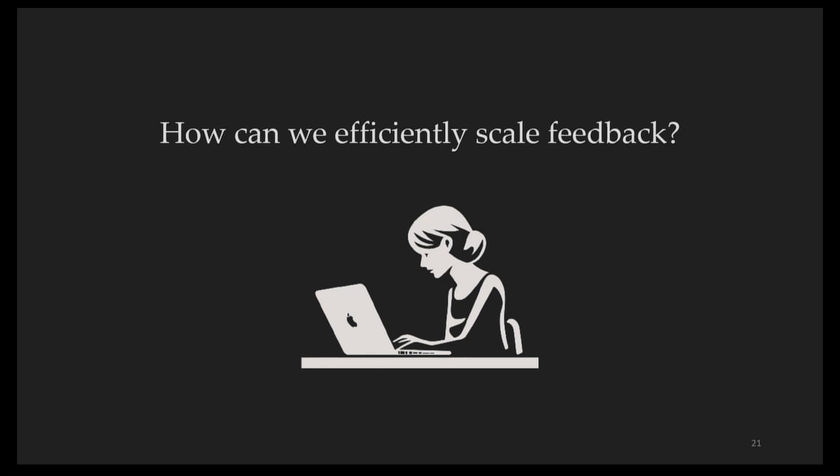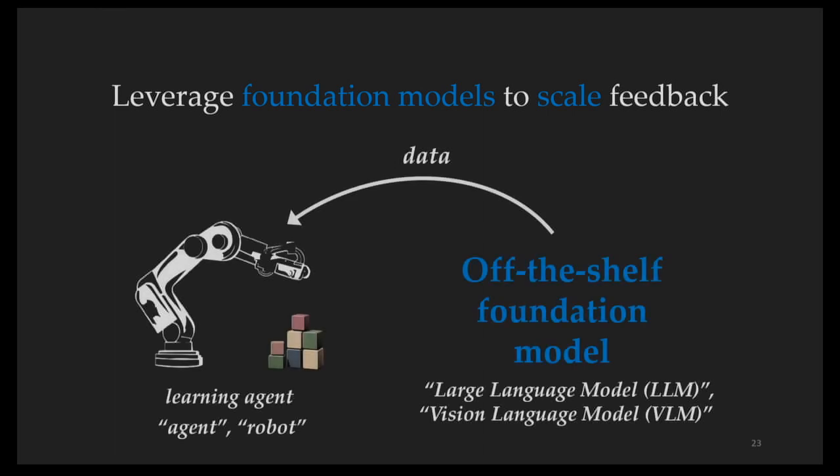I'm interested in how we can physically scale the amount of human feedback, and I'm going to look to foundation models for help. Just as we've used foundation models to assist us with easy, repetitive tasks, maybe we can smartly use foundation models to assist us in giving feedback to train other agents. I'm really excited to share two works that look at ways in which we might do this. But first, a quick terminology clarification. In these works, there are going to be two models: one is the learning agent that's actually being trained — I'm going to call this the agent or robot — and we're also going to have an off-the-shelf foundation model, something like GPT, which I'll refer to as LLM or VLM. I'm not fine-tuning this off-the-shelf foundation model; I'm just using it for inference.